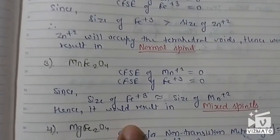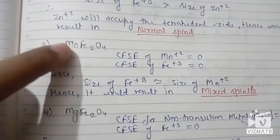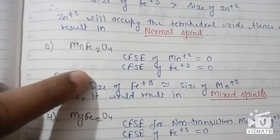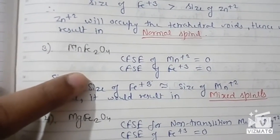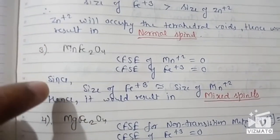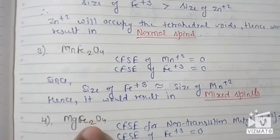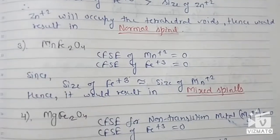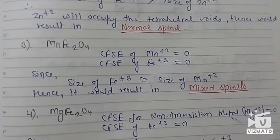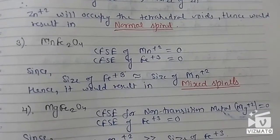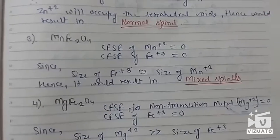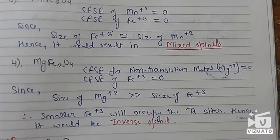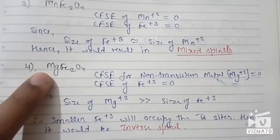If the sizes of the two cations were almost the same, this would result in the formation of a mixed spinel. For example, in MnFe₂O₄, manganese is in the +2 oxidation state and iron is in the +3 oxidation state — both are d⁵. In this case the size of Fe³⁺ and Mn²⁺ are almost the same, so this results in a mixed spinel.